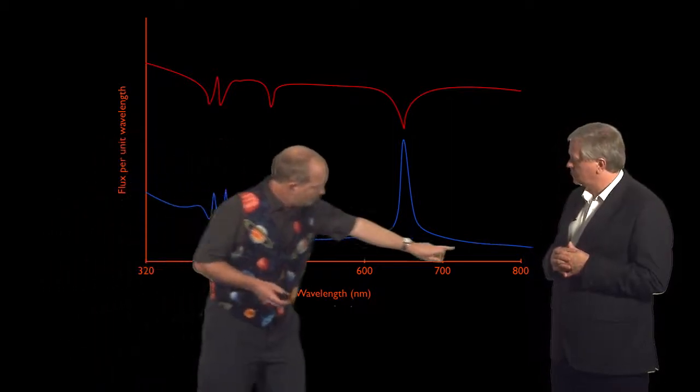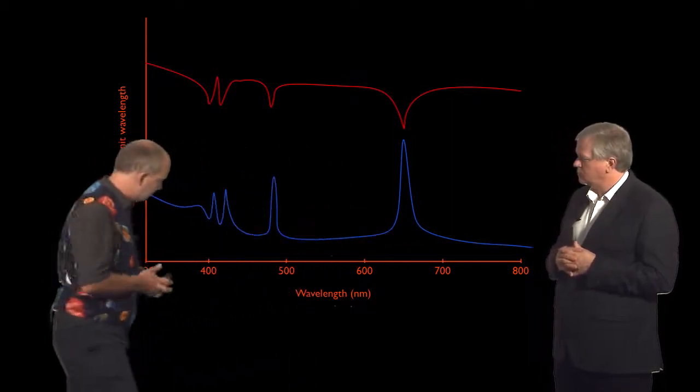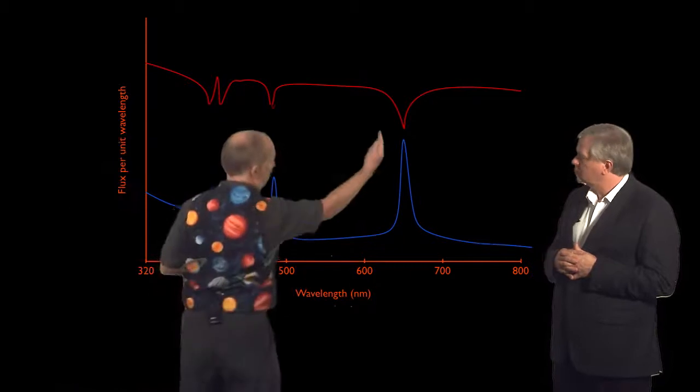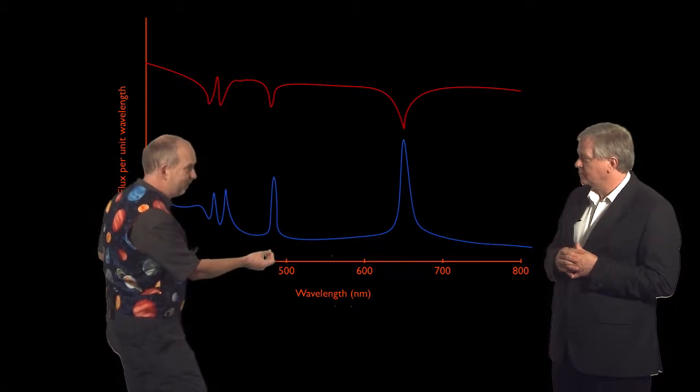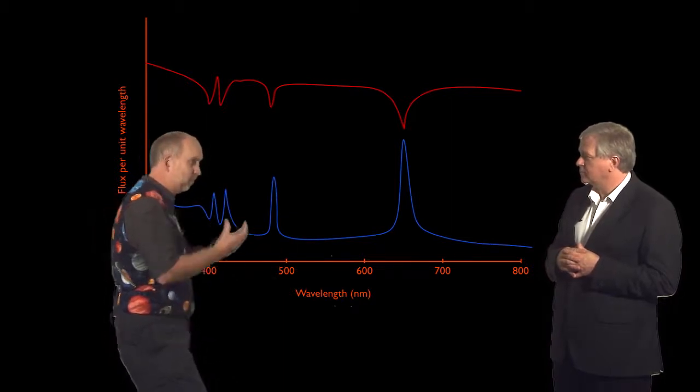You can see at most wavelengths it doesn't emit much light, but there are these big spikes. At this wavelength, 6.5, 6.3 nanometers, and 4.8, 6.1 nanometers, and other wavelengths down here, there's a huge amount of light.